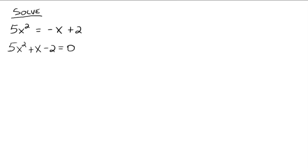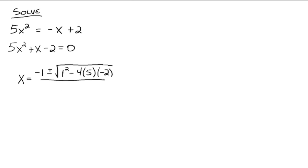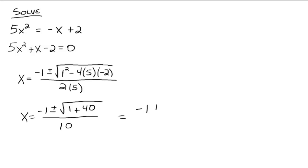We plug into the formula: a is 5, b is 1, and c is negative 2. So x equals negative 1 plus or minus the square root of 1 squared — that's b squared — minus 4 times a times c, which is negative 2, all over 2 times a. Simplifying: x equals negative 1 plus or minus the square root of 1 plus 40, all over 10. The solutions are negative 1 plus or minus the square root of 41, all over 10. The square root of 41 doesn't simplify further, so we leave it as is, giving us two solutions.